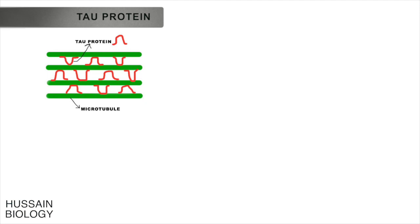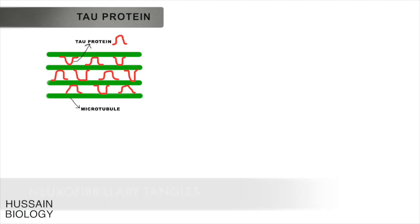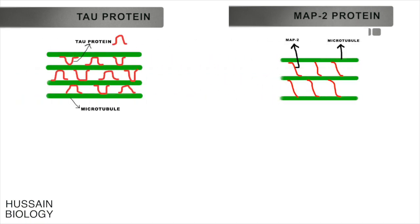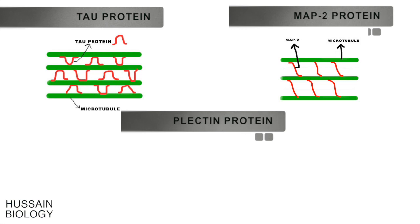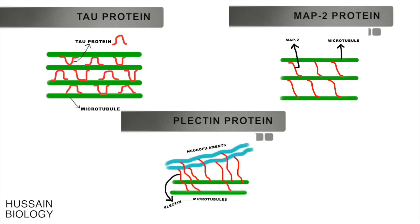Affected persons with excessive tau phosphorylation contain strange tangled filaments called neurofibrillary tangles. Then we have MAP2 proteins, which also cross-link the microtubules but peg them loosely. Finally, there is plectin, a protein which links microtubules with intermediate filaments — for example, plectin links microtubules with neurofilaments.